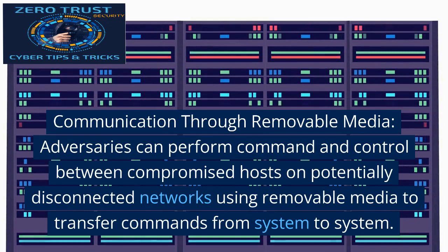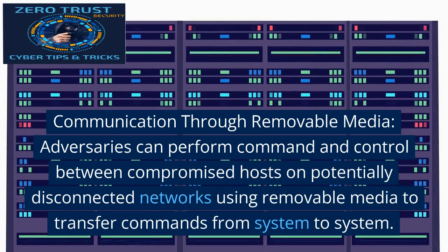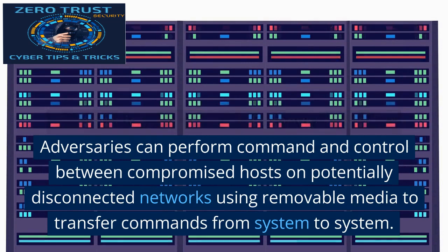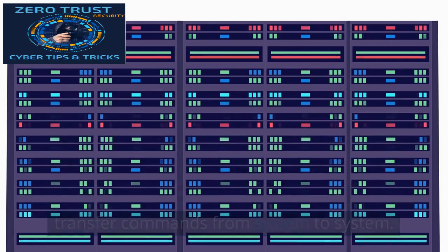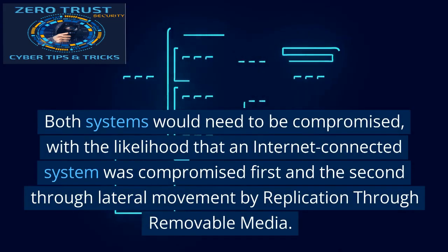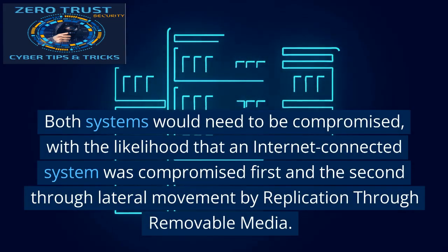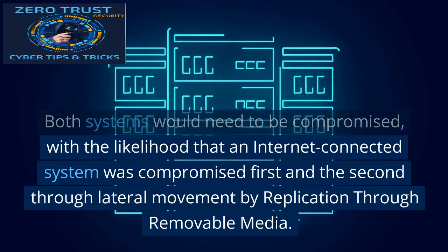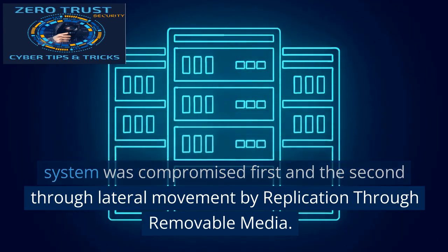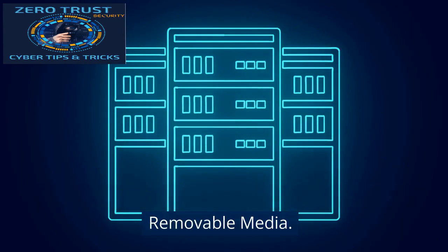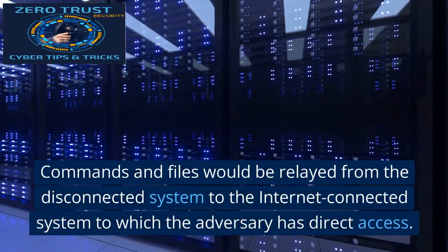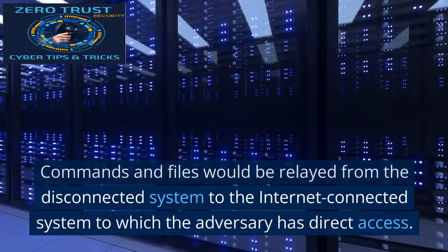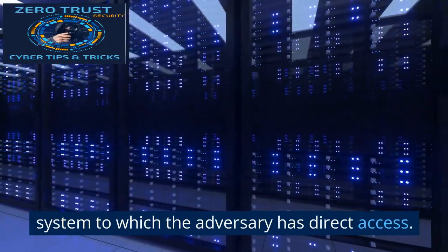Communication through removable media: Adversaries can perform command and control between compromised hosts on potentially disconnected networks using removable media to transfer commands between systems. Both systems would need to be compromised, with the likelihood that an internet-connected system was compromised first and the second through lateral movement by replication through removable media. Commands and files would be relayed from the disconnected system to the internet-connected system to which the adversary has direct access.